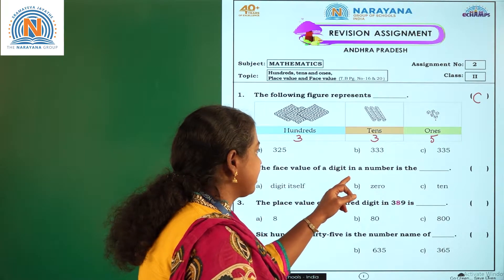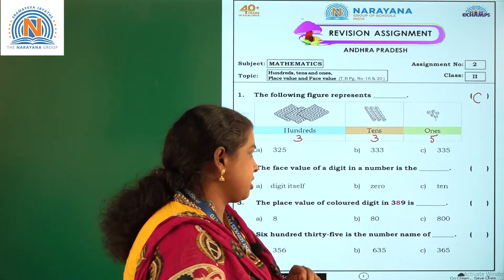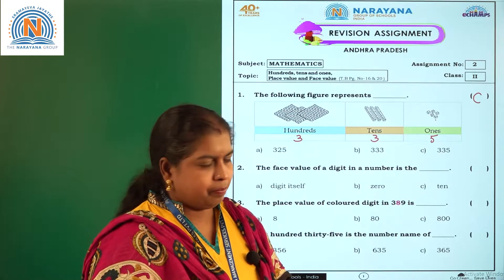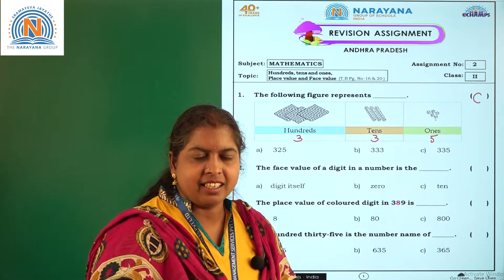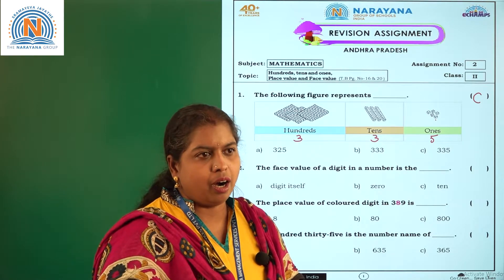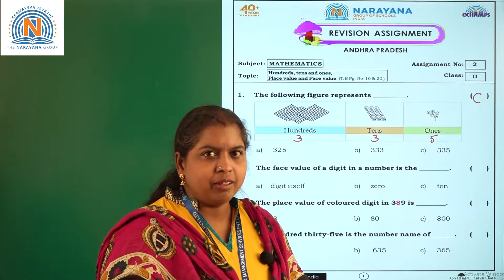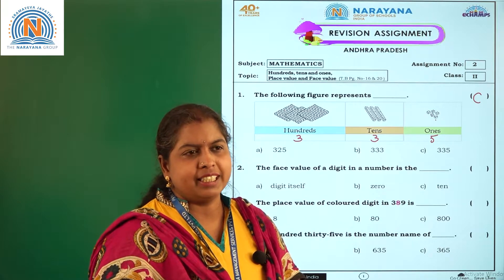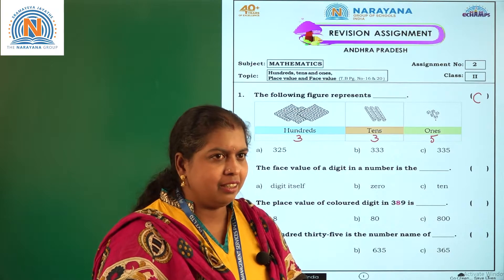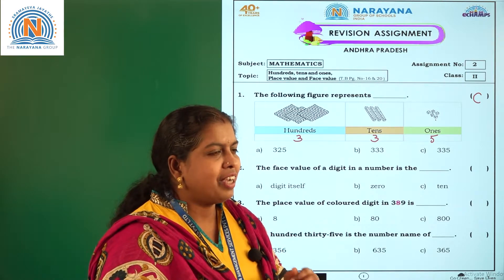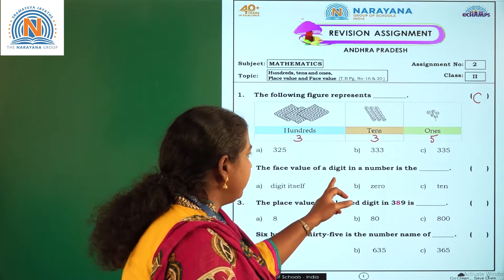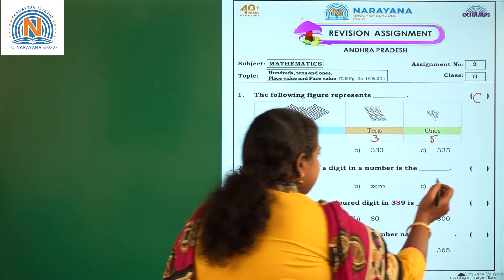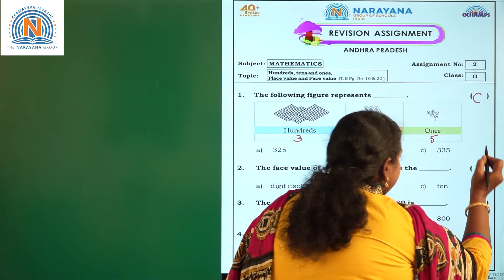Second question: The face value of a digit in a number is the blank. The face value of any digit in a number is itself. If you consider the face value of digit 5 in the number 15, it is 5. And if you consider the face value of digit 5 in the number 51, it is also 5. So the face value of a digit in a number is the digit itself. So the correct option is A.